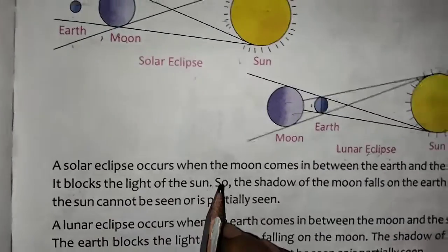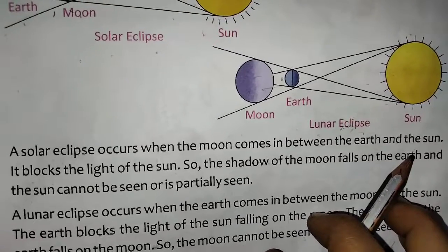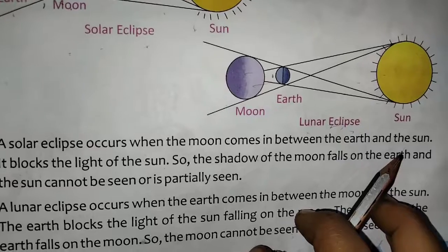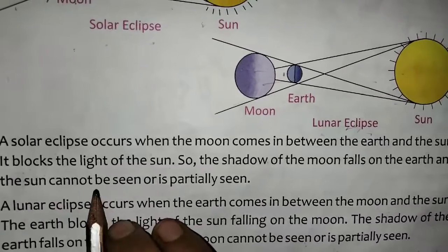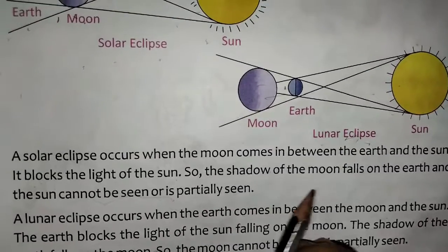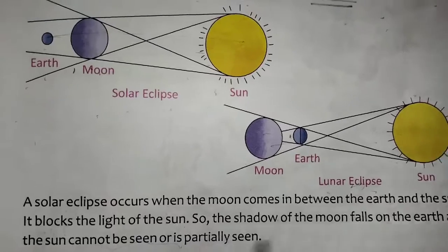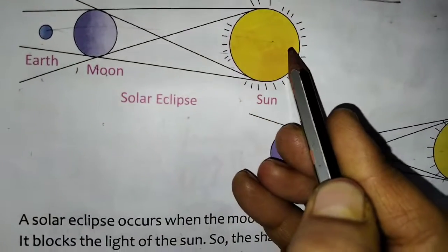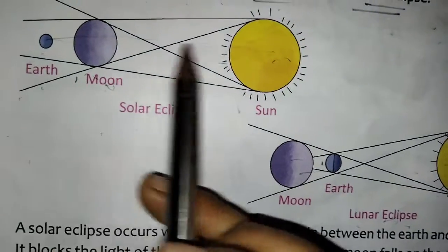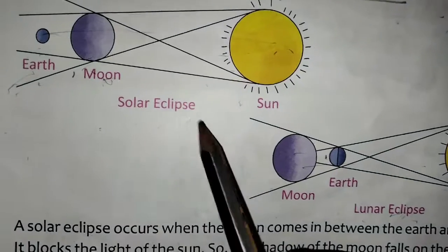A solar eclipse occurs when the moon comes in between the earth and the sun. It blocks the light of the sun. The shadow of the moon falls on the earth. The sun's light goes on the moon and this light will not pass on to the earth. That is known as a solar eclipse.